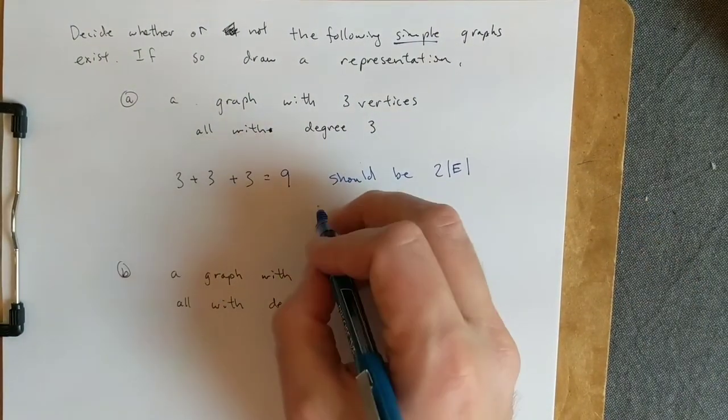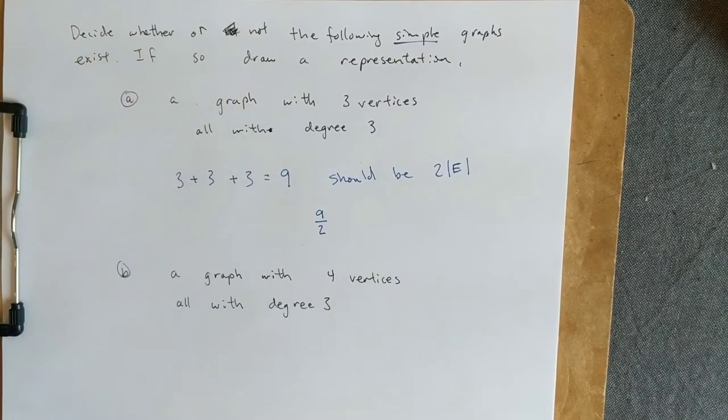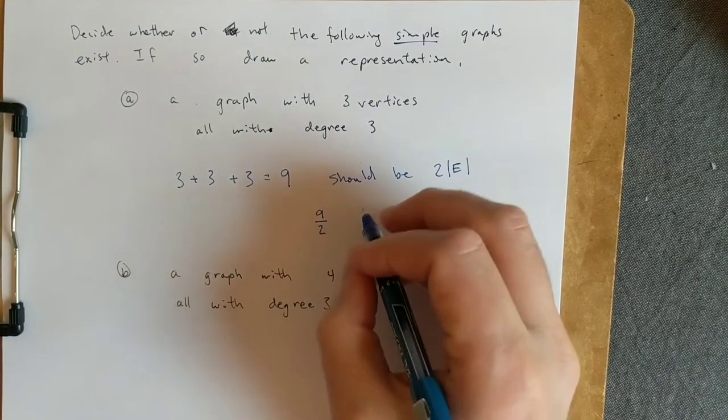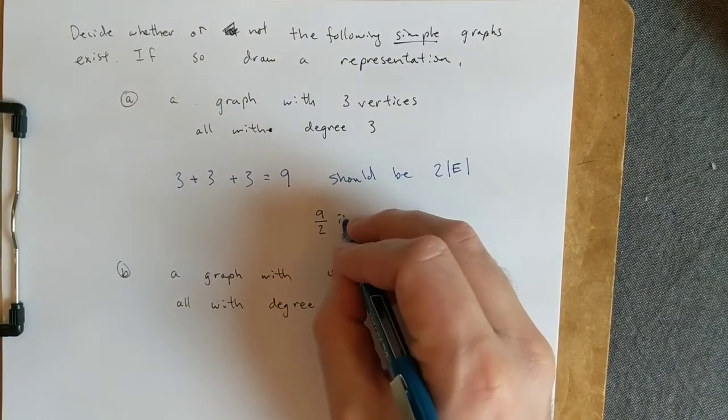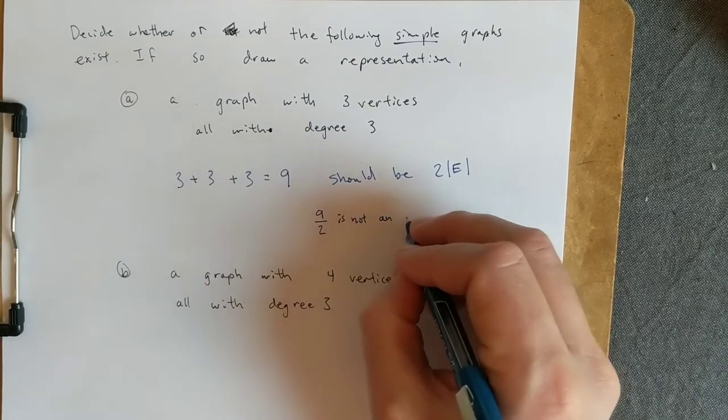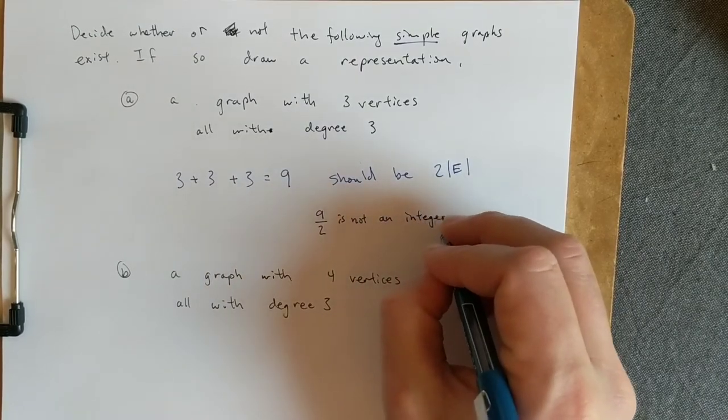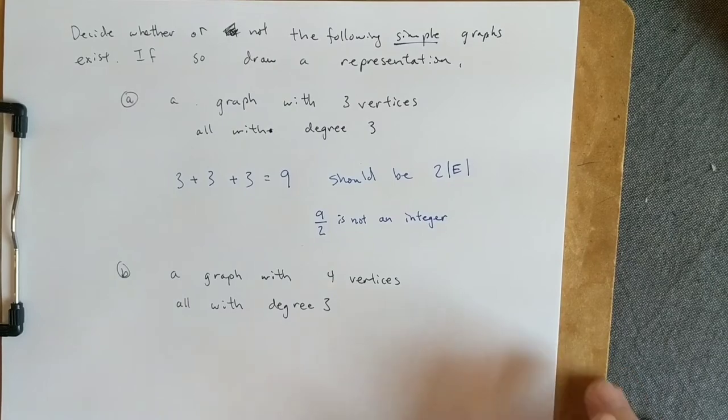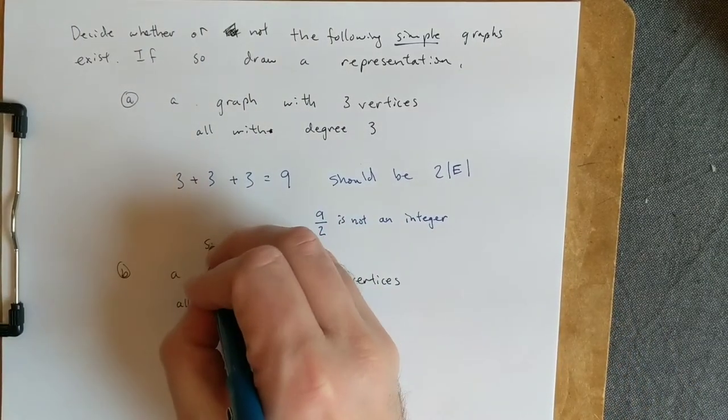This should be two times the amount of edges. The reason this is a problem is if I divide this by two, this is not an integer. The number of edges should be a whole number, so this graph does not exist.